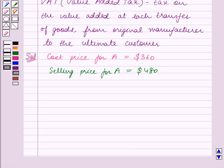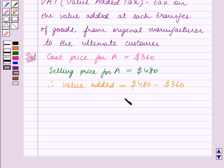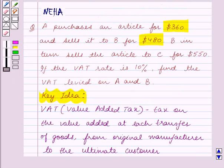We will now calculate the value added. Value added equals selling price minus cost price. That is $480 minus $360, which equals $120. We have to find the VAT levied on A and B. First we will find it for A.